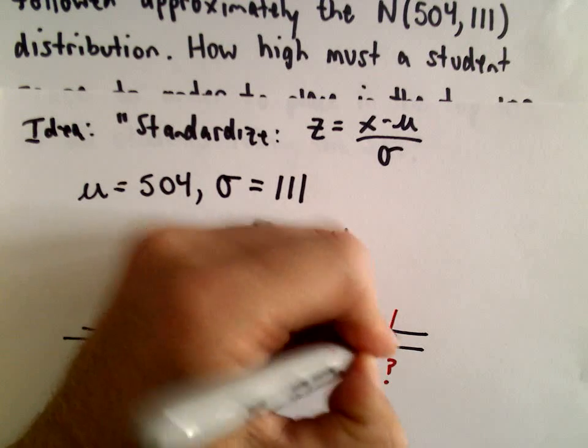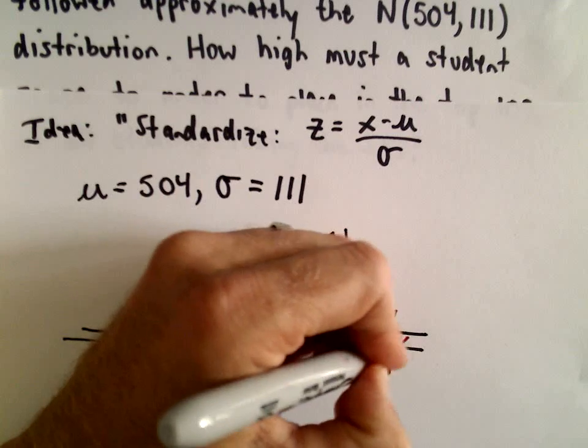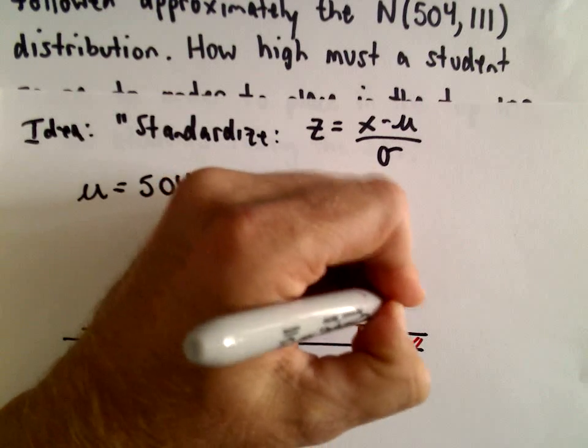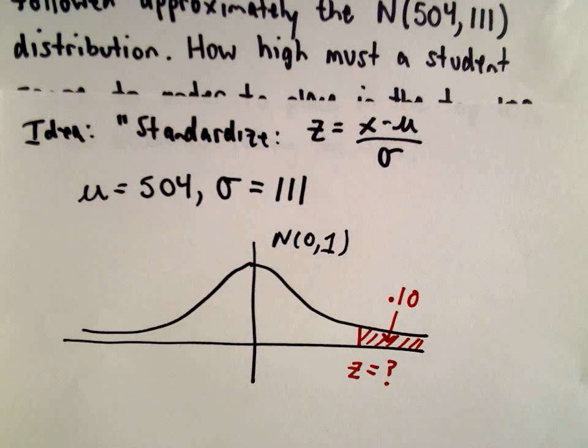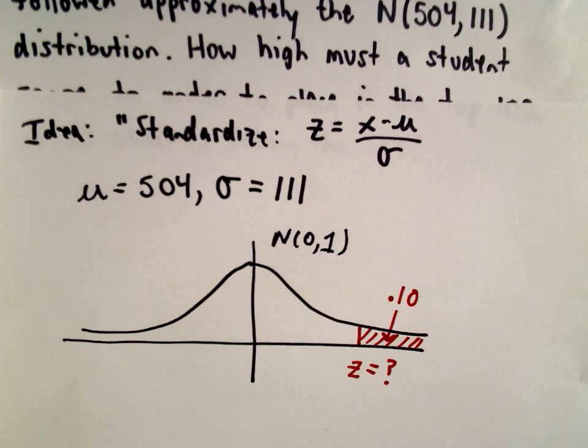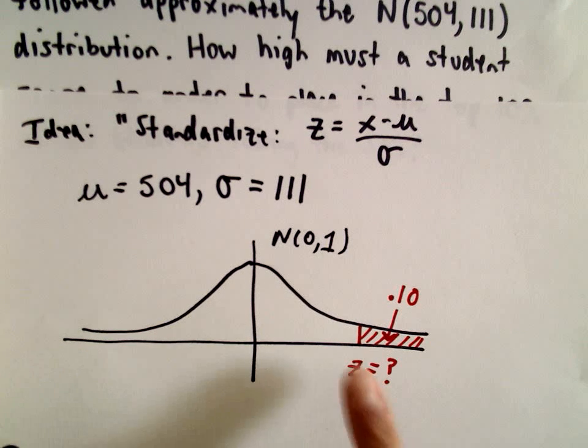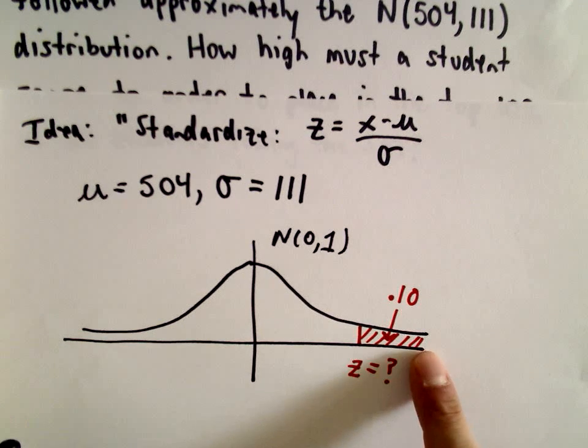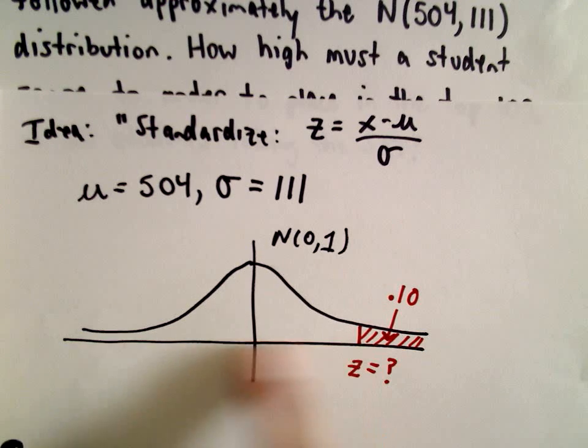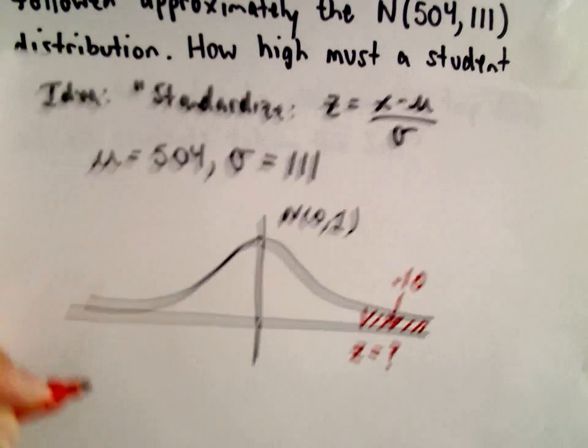So that means we want the area underneath the right portion of the curve to be 0.10. The z-score table that I'm using doesn't tell us the area to the right of the z-score, it tells us the area to the left of the z-score.